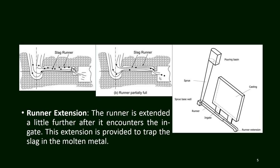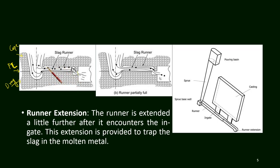When casting ferrous metals, the runner is placed in the cope side and the gate is placed in the drag side. Looking at the diagram, this line is the parting line. Above the parting line is cope and below is drag. The runner is placed in the cope side and the gate is below the parting line in the drag. This is done so that when molten metal is coming, slags which are along with the molten metal will be arrested at this corner and will not go inside the mold cavity.